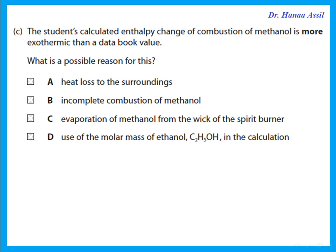The student's calculated enthalpy change of combustion of methanol is more exothermic than the data book value — he got a value higher than expected. Heat loss to the environment would give a lower value, not higher. Incomplete combustion would also cause a lower delta H. Evaporation of methanol would also give a lower exothermic value. However, if he uses the molar mass of ethanol instead, he's using the wrong mass, and that means he could get more than the expected value.